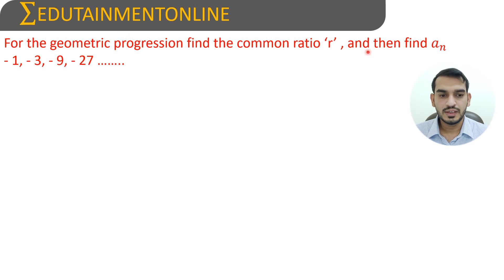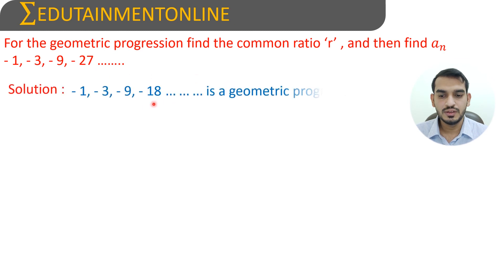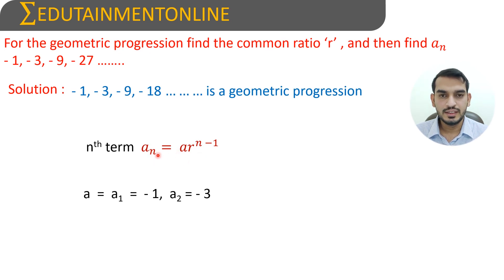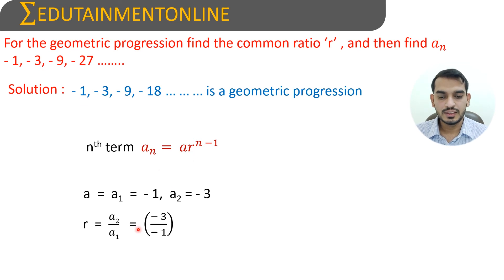For the geometric progression, find the common ratio and find An. The series is -1, -3, -9, -27, and so on. Using the nth term formula An equals A into R power N minus 1, the first term A is -1. R equals A2 by A1, which is -3 divided by -1. The negatives cancel, so the common ratio is 3.